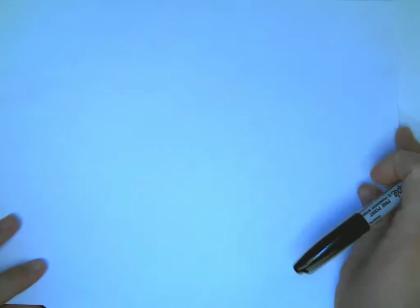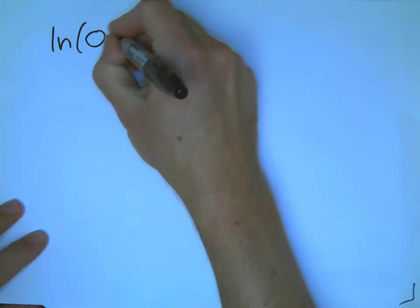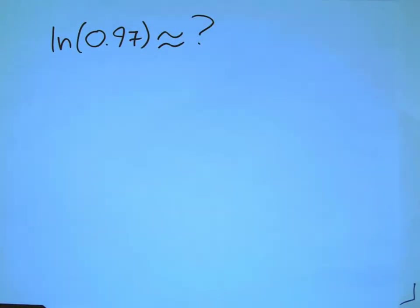Here's another problem about linear approximations. Suppose we want to know what's an approximation for ln of 0.97. We want to see how calculus can inform our ideas about that.